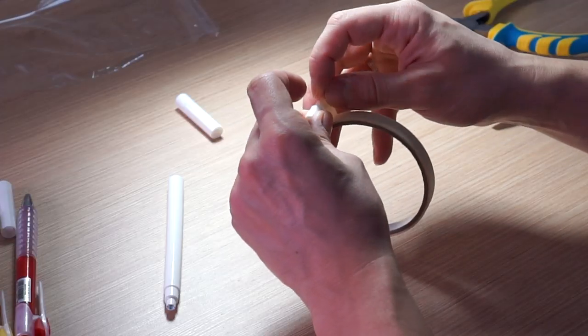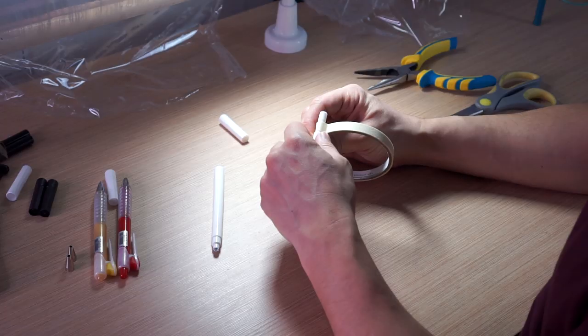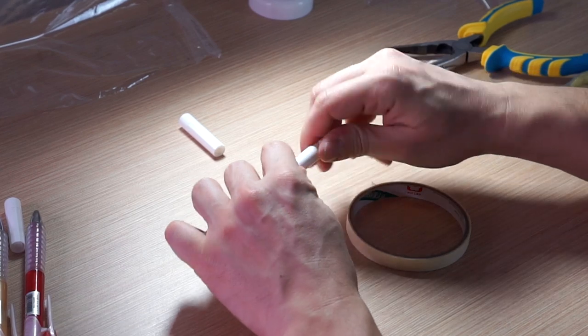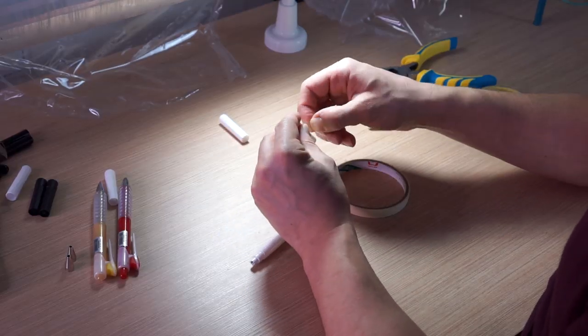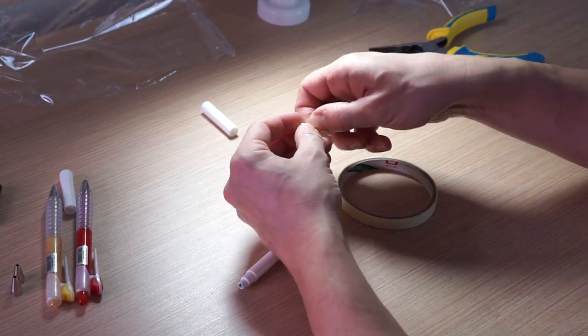So now I put paper tape on connector, so this connector should fit body of Crayola Super Tip. If there is too much paper tape I will reduce its amount a little bit.